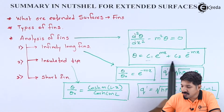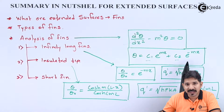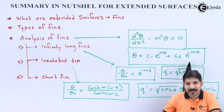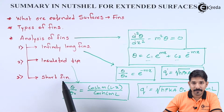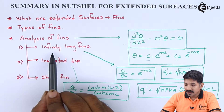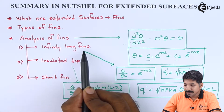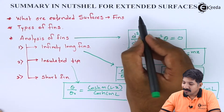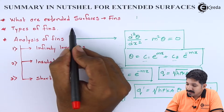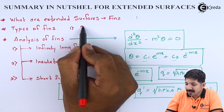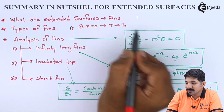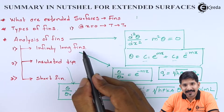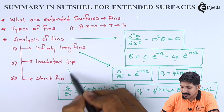In this solution we have two constants C₁ and C₂. To solve for these two constants we need two boundary conditions. Based on the boundary condition, we can classify fins into three categories. The first boundary condition is always at x = 0, where the temperature equals the temperature of the slab. The second boundary condition varies according to the type.